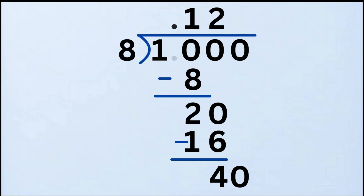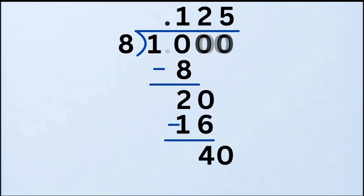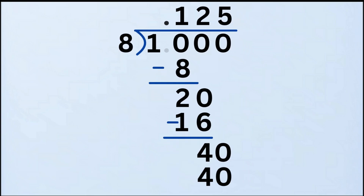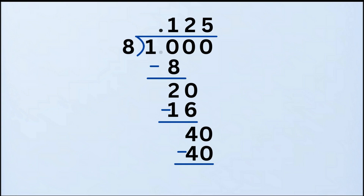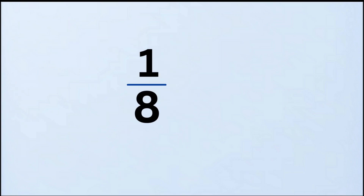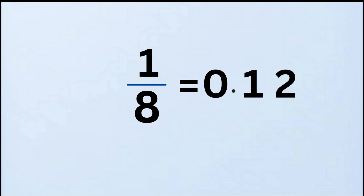Ask: how many times does 8 go into 40? That's 5 times. Write 5 in the quotient. Multiply: 8 times 5 equals 40. Subtract: 40 minus 40 equals 0. No remainder — we're done. So 1 eighth as a decimal is 0.125.